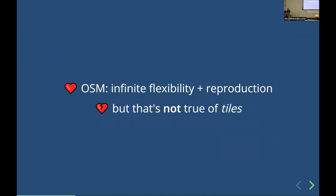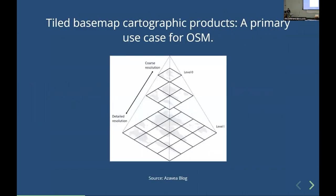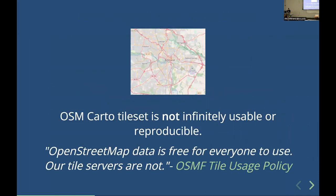I've sold you on the idea of OSM as being infinitely reproducible and infinitely possible, but that's never been true of tiles. Tiles are a primary use case for OSM — building a tiled web map. They have zoom levels and make interactive maps possible. But OpenStreetMap is the opposite of infinitely reproducible for tiles. OpenStreetMap data is free for everyone to use, but tile servers are not. OSM Carto has to scale up a worldwide tile server, and it's not really polite to scrape it or make mass downloads. You can't take all of OSM Carto and put it on your own machine because there are so many tiles and a complex process to produce those raster tiles.